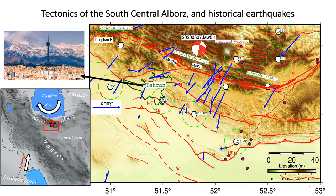The region is situated in South Central Alborz. The main tectonic regime is convergence of the Arabian plate to the Eurasian plate, and also clockwise rotation of the South Caspian Basin, which resulted in complex deformation in the region. This is also observable from GPS vectors shown in blue with reference to the Great Kavir in central Iran.